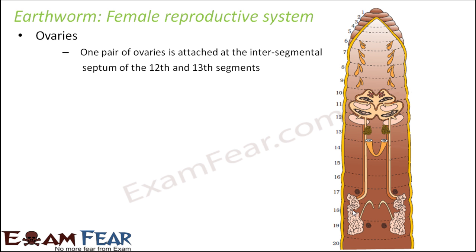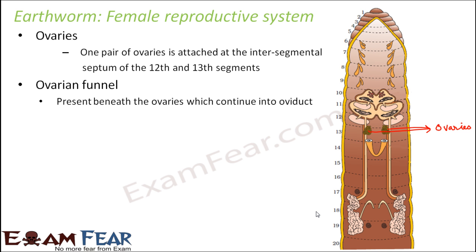The ovaries are located at the intersegmental septum of the 12th and 13th segment. These pair of structures are the ovaries — organs which produce the egg. There is an ovarian funnel present beneath the ovaries which connects to the oviduct. When the ovaries release the eggs, the funnel collects them and connects them to the oviduct.